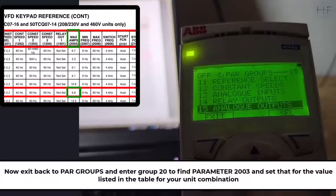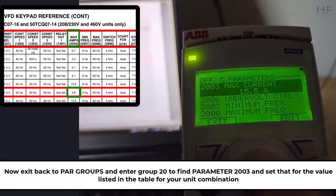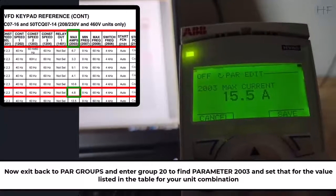Now exit back to parameter groups and enter group 20 to find parameter 2003 and set that for the value listed in the table for your specific unit.